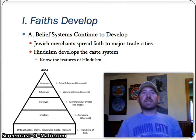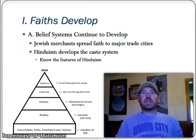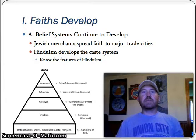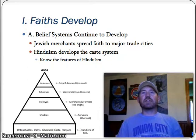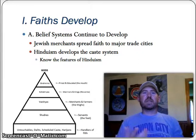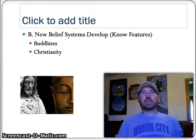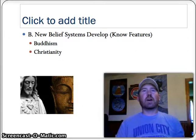Different components are added to these religions, such as the caste system with Hinduism. Hinduism is a polytheistic religion and Judaism is a monotheistic religion — you already should know that. During the beginning of this time period, they begin to spread, particularly the Jewish religion, spread by merchants going to major trade cities throughout the Mediterranean. It's relatively regional, but it's the first time this begins to happen. Know those features of Hinduism and the caste system along with the chart provided.